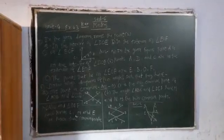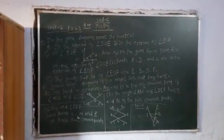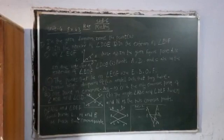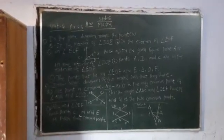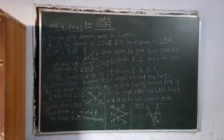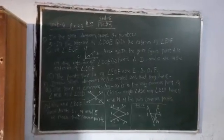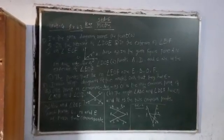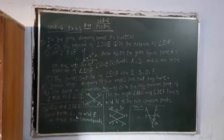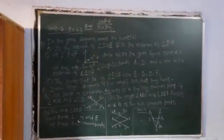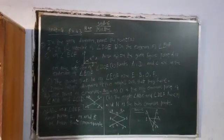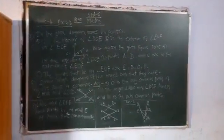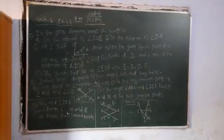The points on angle EOF are E, B, O, F. Now question number 3: Draw a rough diagram of two angles such that they have one point in common. I have shown here the rough diagram.